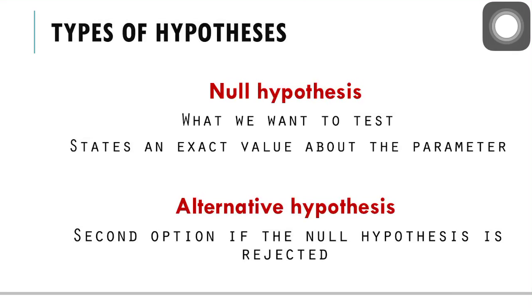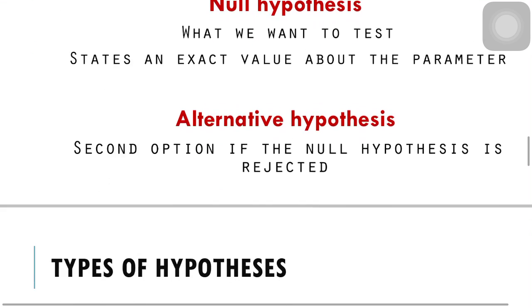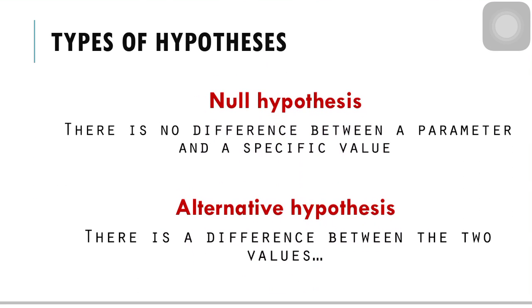There are two kinds of hypotheses: the null and the alternative. The null says it's equal. The alternative states it's not equal, or it's greater than, or it's less than. The null says there's no difference. The alternative says there is a difference — that's why it's not equal.